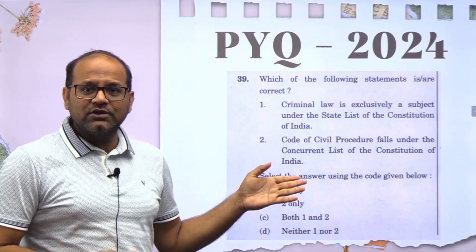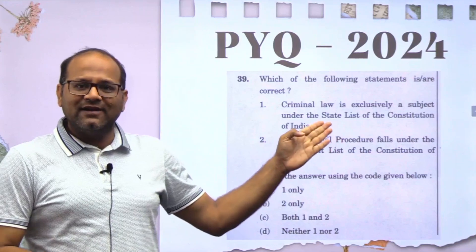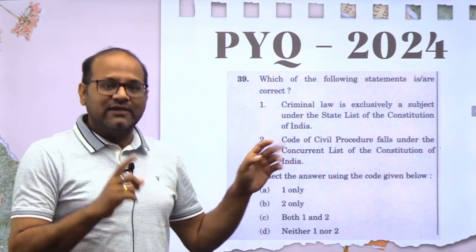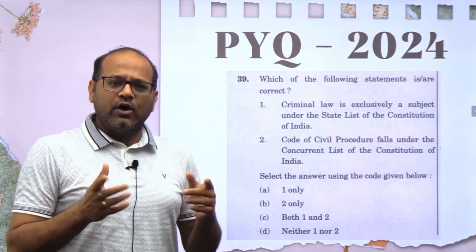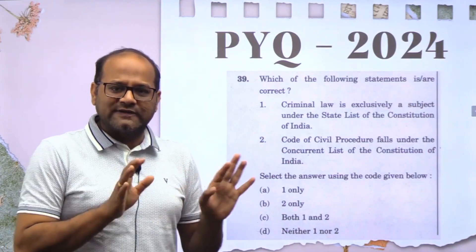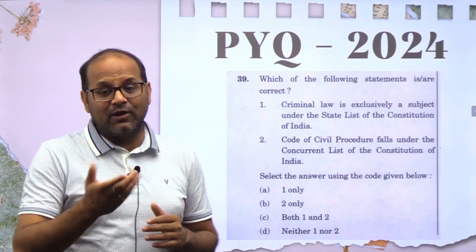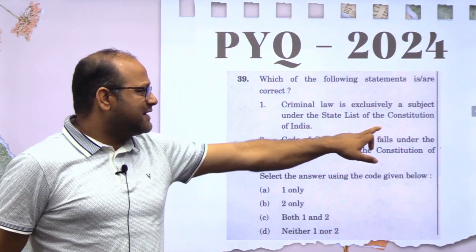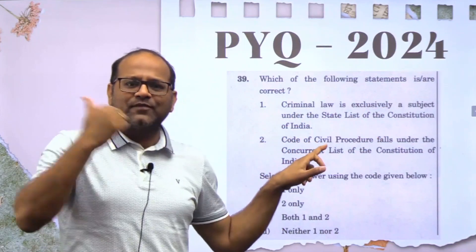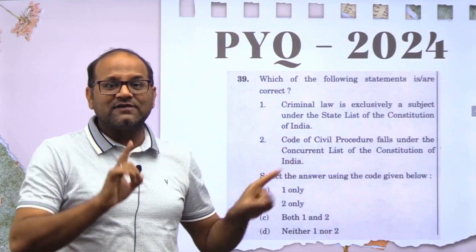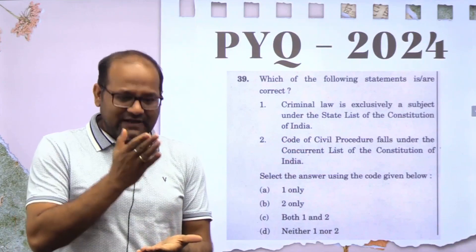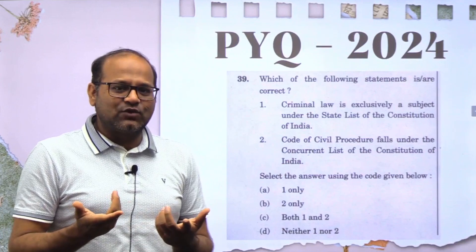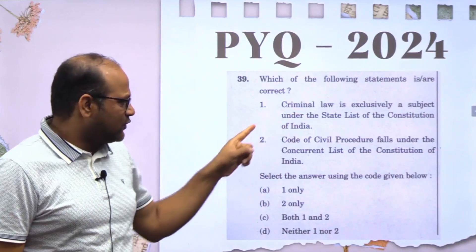Talking about this particular question: are criminal laws related to the state list? If Parliament has passed these laws, then use your common sense — many states objected that they have their own laws. So the statement 'criminal law is exclusively a subject under the state list' is wrong. Criminal laws are in the concurrent list. If the Centre has enacted something, it cannot be exclusively a state list subject. So statement one is wrong.